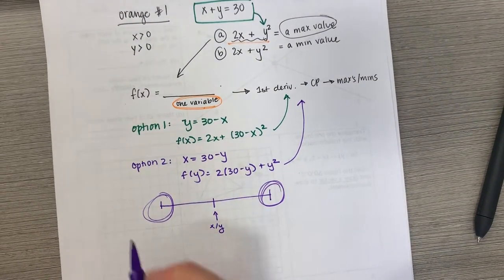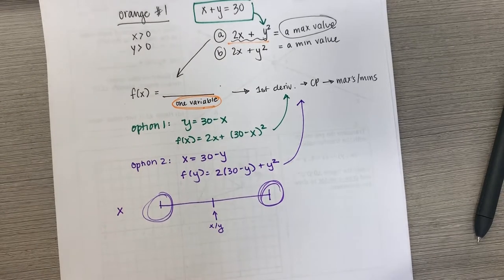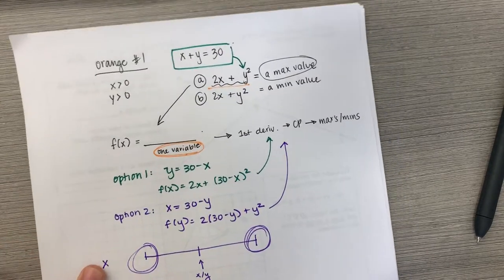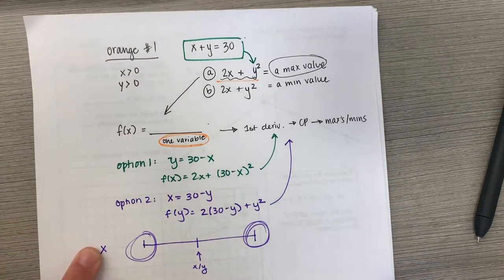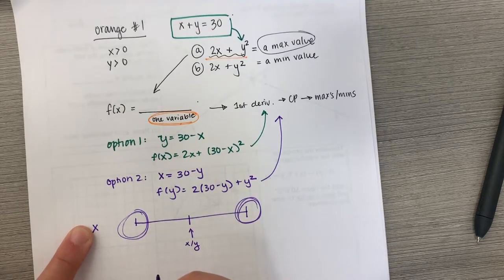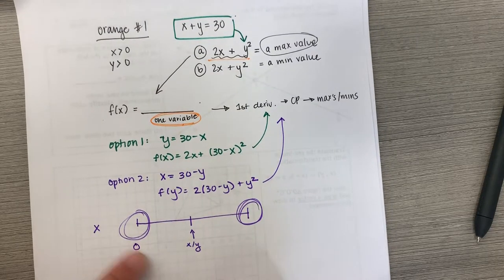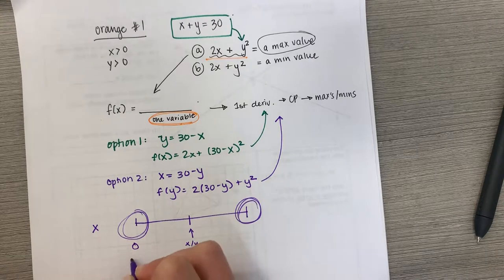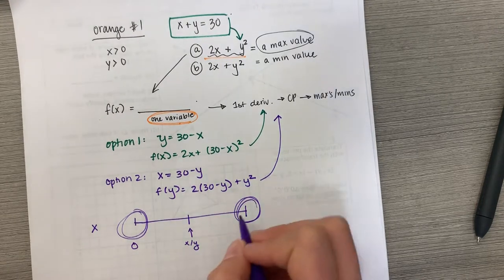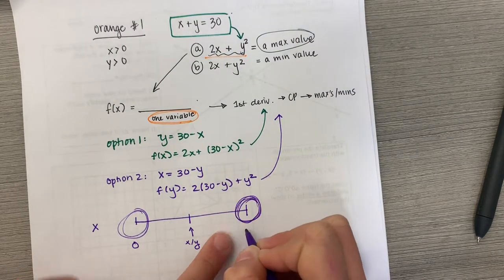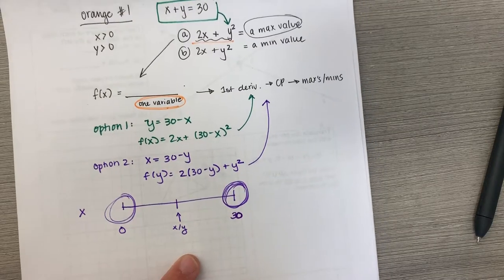We know that if this is for x, what is the smallest number that x could possibly be? 0. And if x is 0, then y must be 30. If y is 0, then x, the largest it could possibly be, is 30.